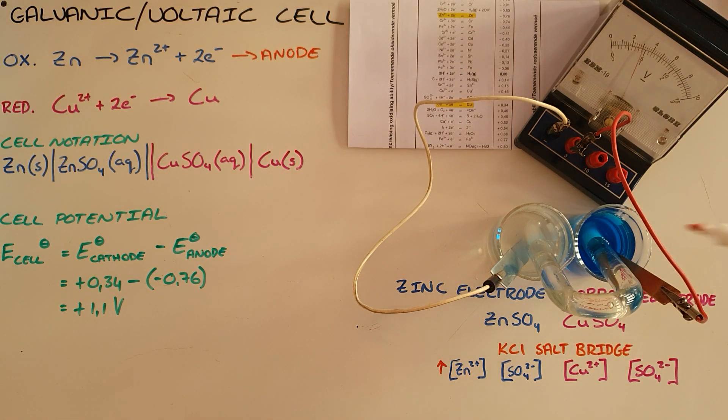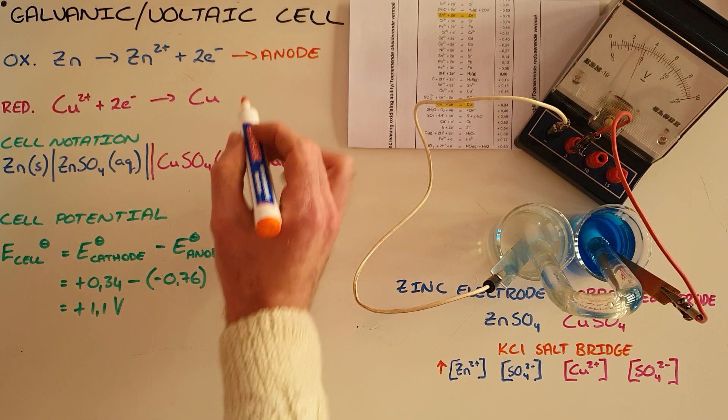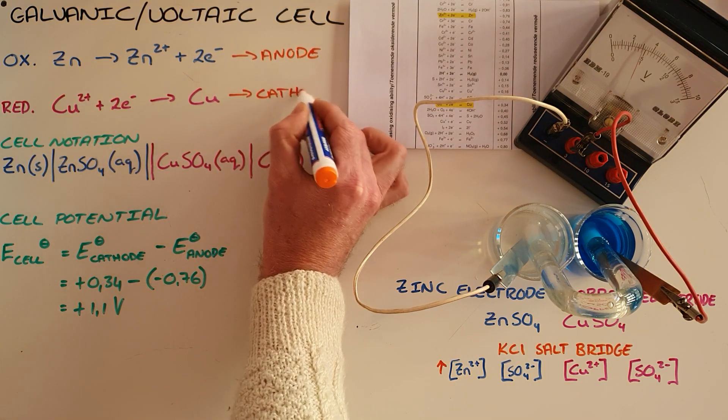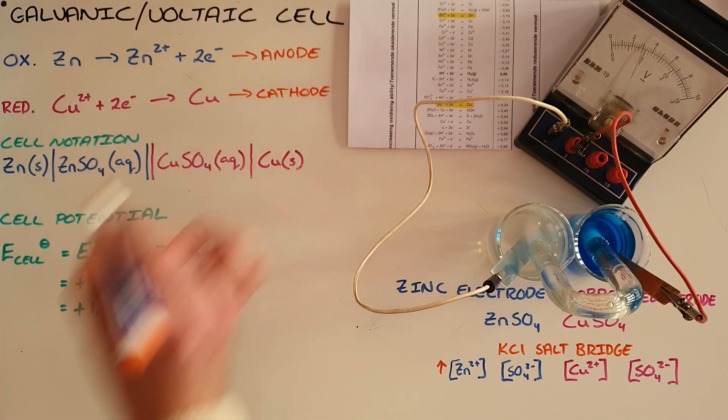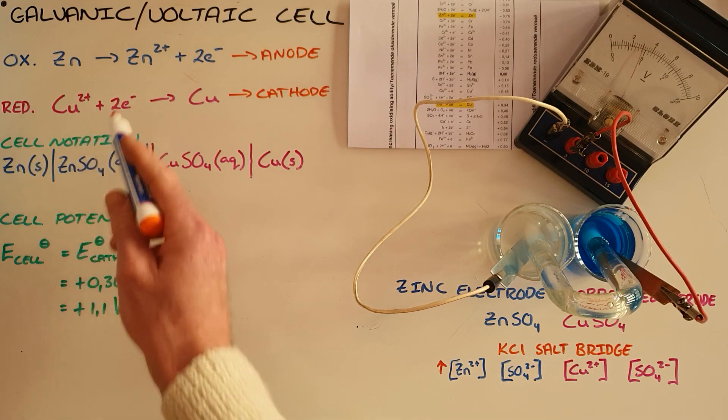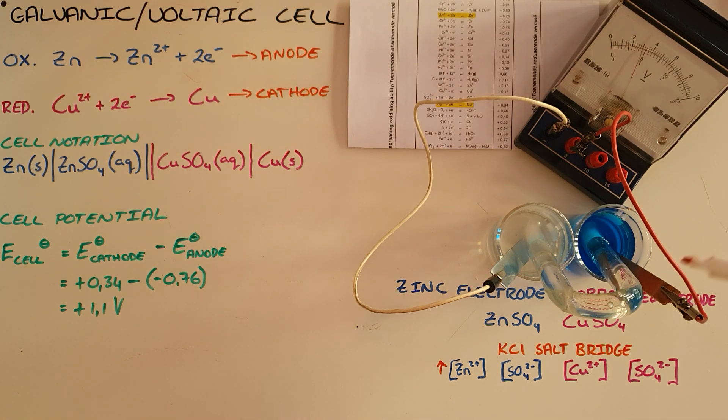In our other beaker, we now have reduction taking place. We know that reduction always occurs at the cathode. And what this tells us is that the copper ions are being attracted to the copper electrode where the electrons are moving towards. And therefore, the copper ions, when they leave that solution, therefore, the copper ion concentration decreases.